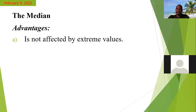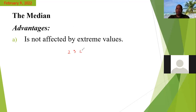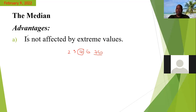An advantage of the median is that it is not affected by extreme values. If we had values two, three, four, five, and 75, to find the median we simply pick out the one in the middle, and this extreme value would not affect it. That's one advantage of the median — it is not affected by extreme values.